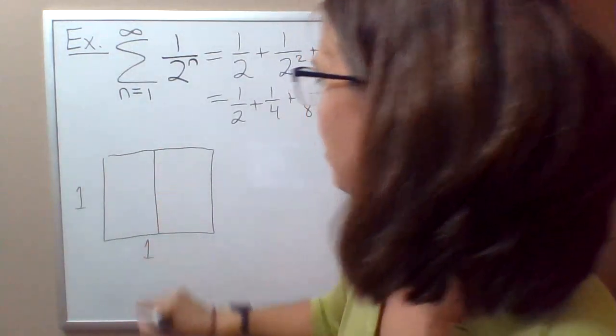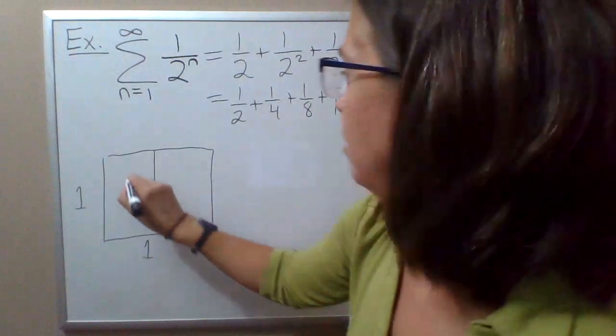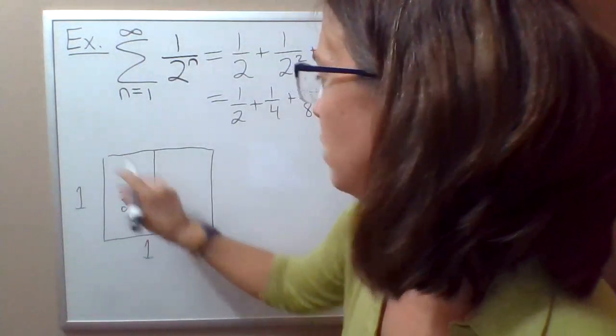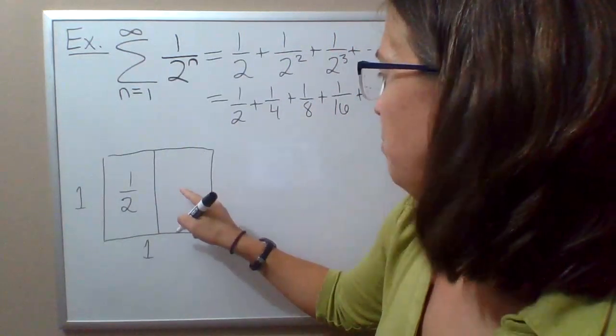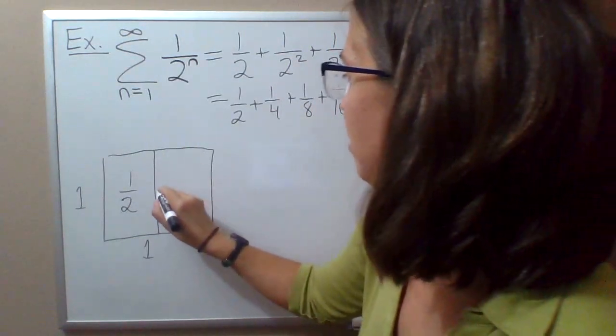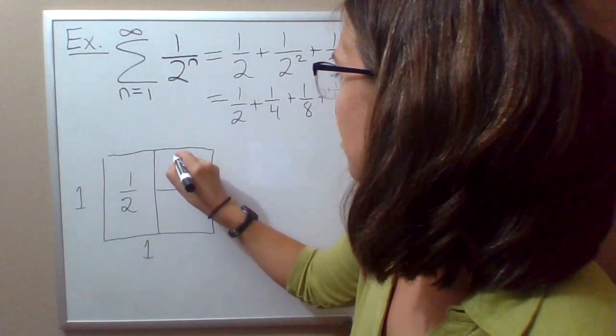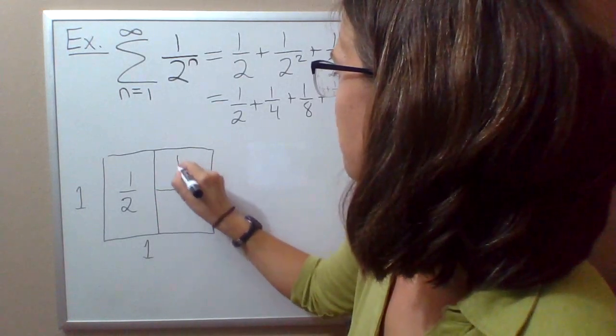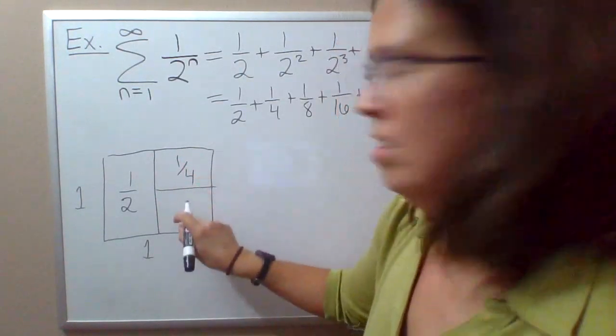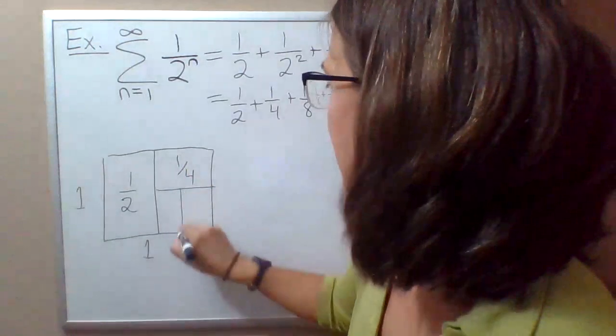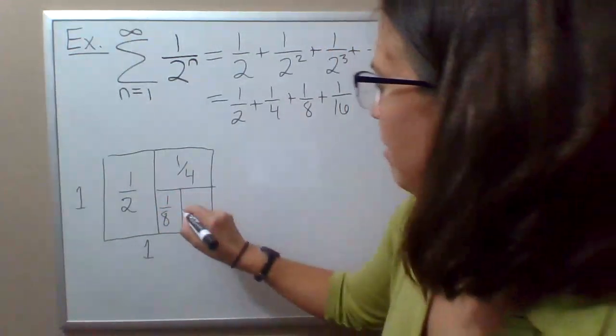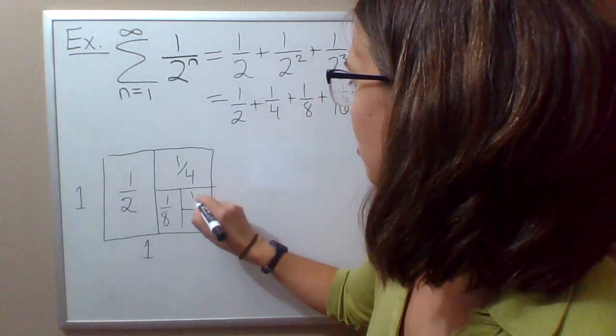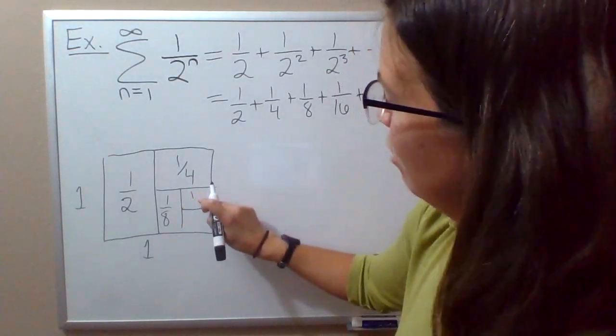Suppose we divide it in half, so the area of this rectangle would be 1 half. Take the remaining rectangle and divide that in half, so the area of this square here will be 1 fourth. Take the remaining square, divide that in half, the area here will be 1 eighth.